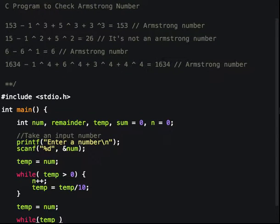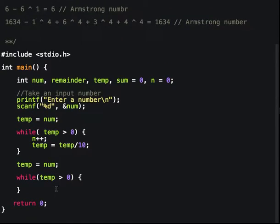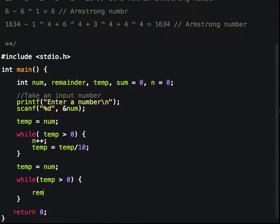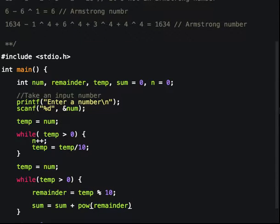This time, while temp is greater than 0, let's first find the remainder of the number. Then let's calculate the sum: sum is sum plus, remember the concept of Armstrong number, we have to find the remainder to the power of n. Now reduce the number by dividing by 10. For using power, we have to include math.h.